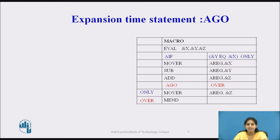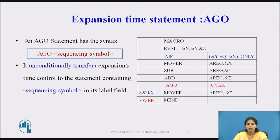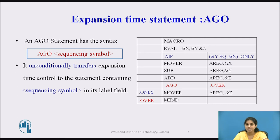Next we see the AGO statement. The AGO statement has the syntax: first we specify AGO, then we specify the sequencing symbol. Basically, the AGO statement unconditionally transfers the expansion time control to the statement containing the sequencing symbol in its label field — it is an unconditional control transfer.